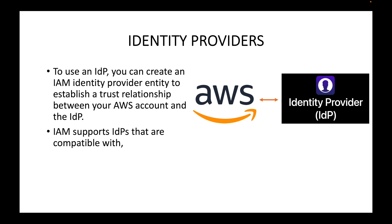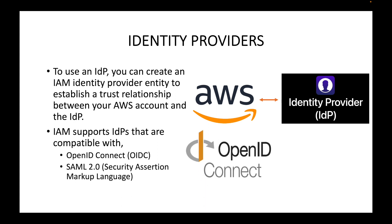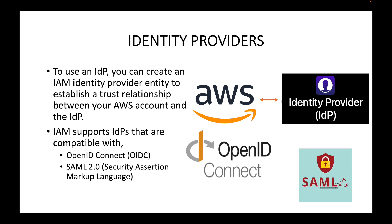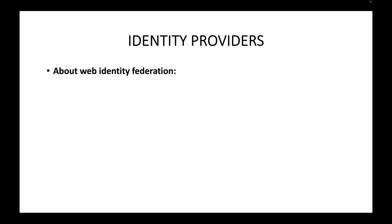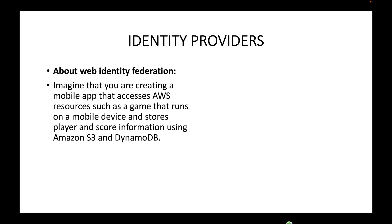IAM supports two types of identity providers: OpenID Connect and SAML 2.0, which stands for Security Assertion Markup Language. You can either go with OpenID Connect or SAML authentication. OpenID Connect is also known as web identity federation. Imagine you are creating a mobile app that needs access to different AWS resources.